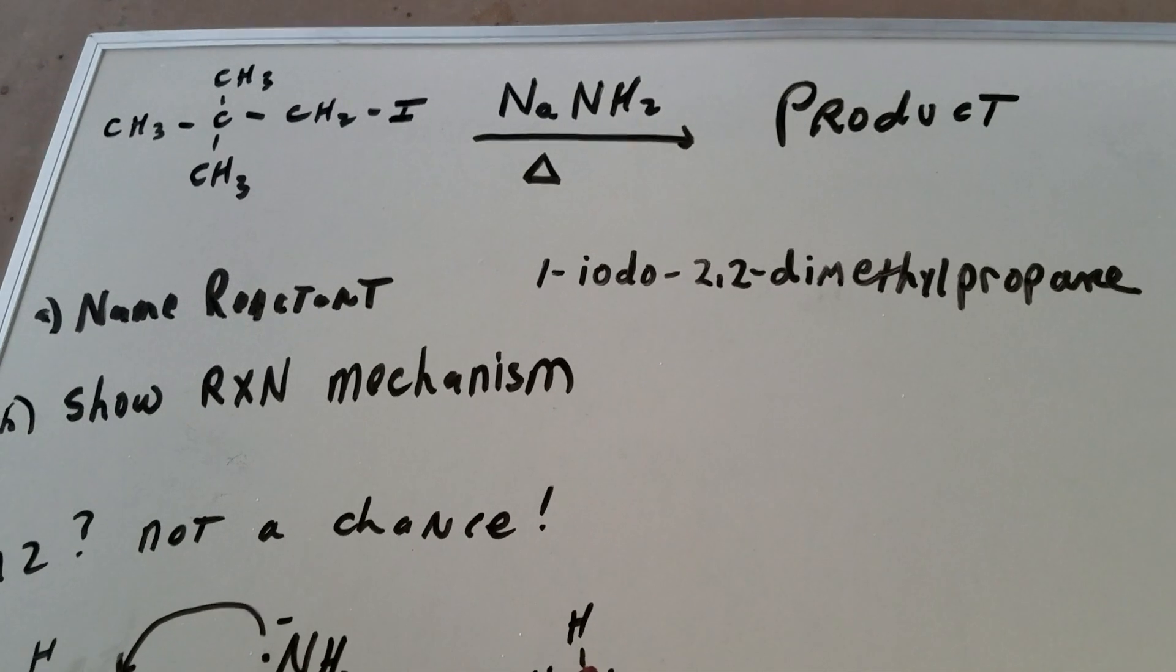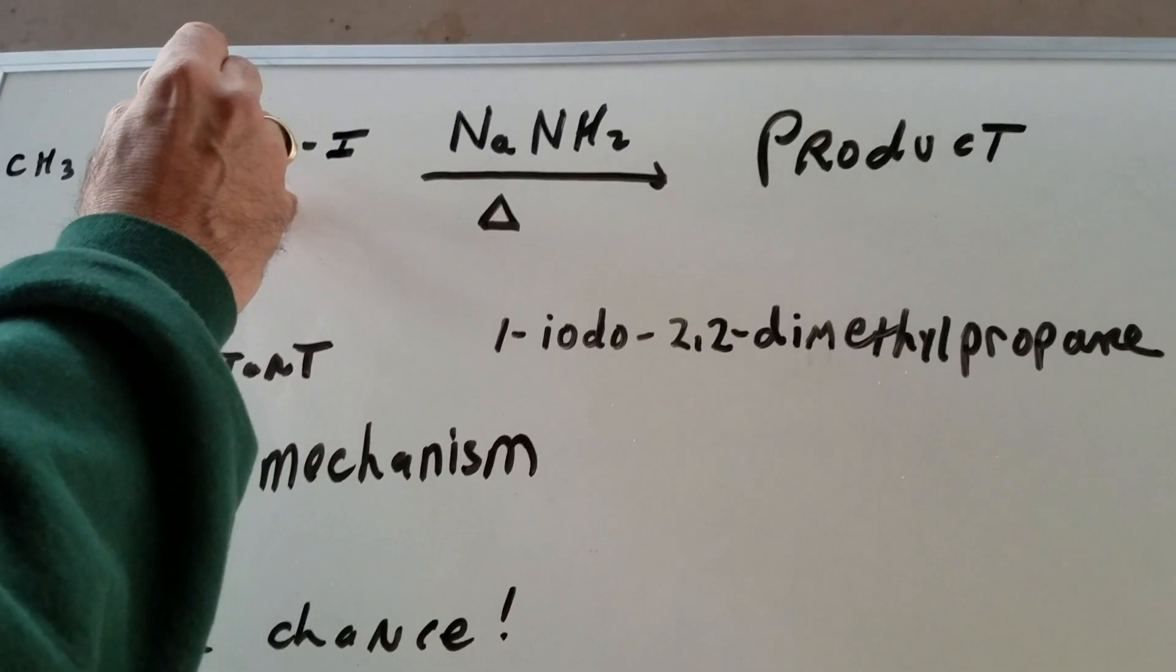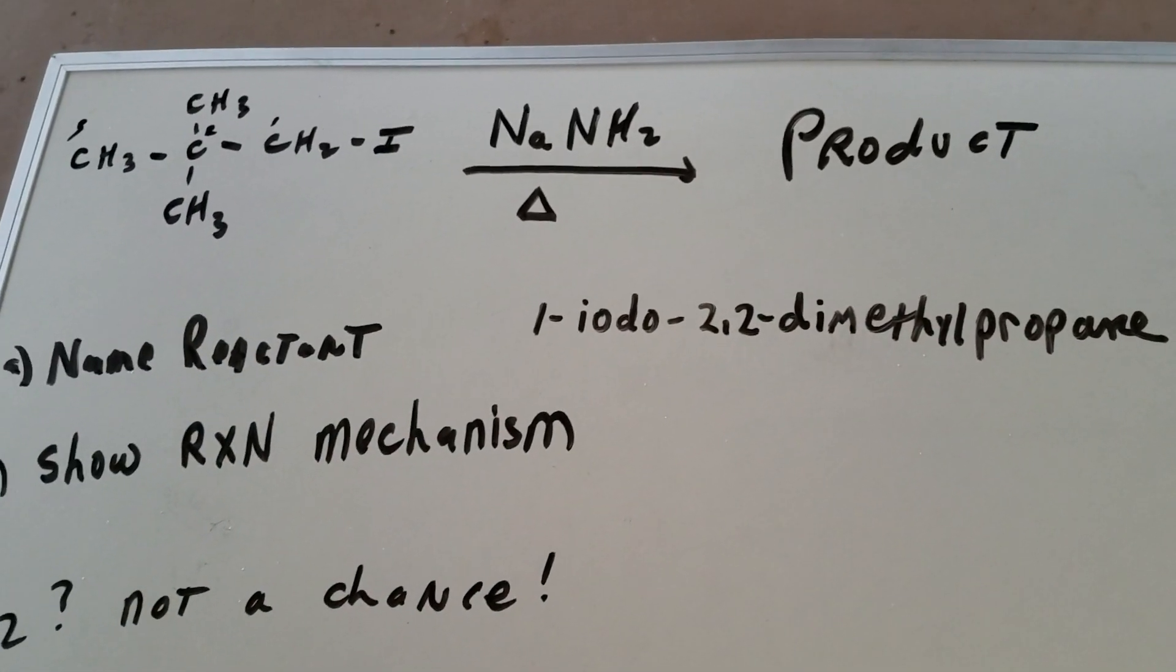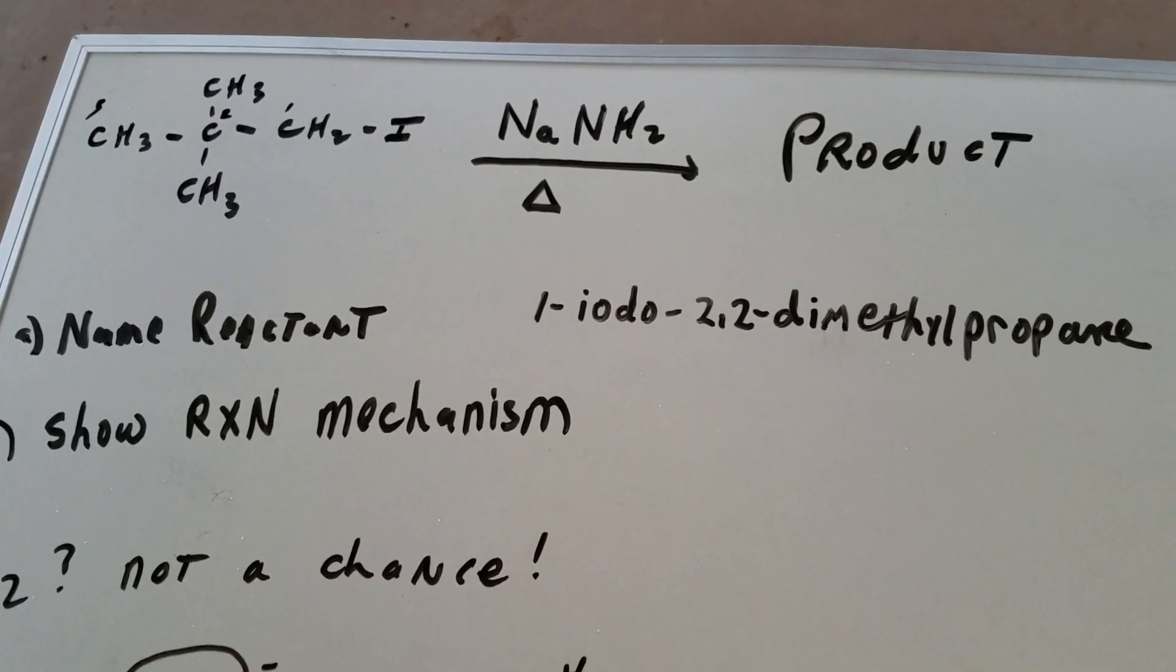Well first of all, let's name the reactant. That's a good question. So the first thing I'm going to do is I'm going to start from here and call this one, this is two, and this is three. And I would get one iodo-2,2-dimethylpropane.